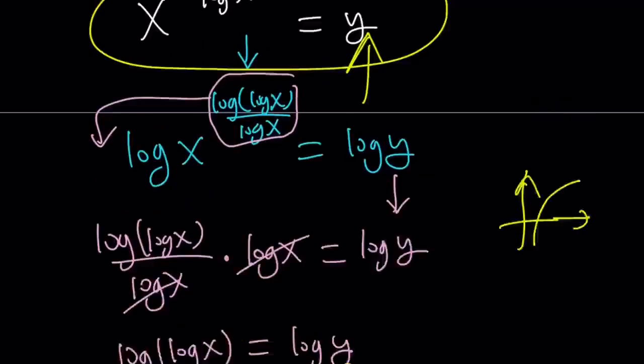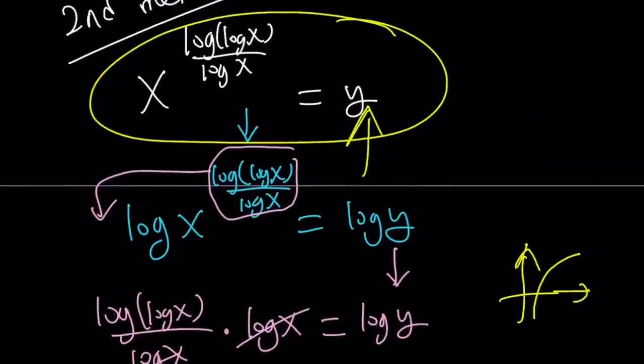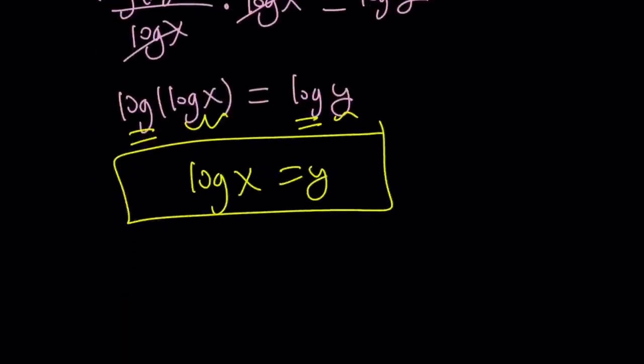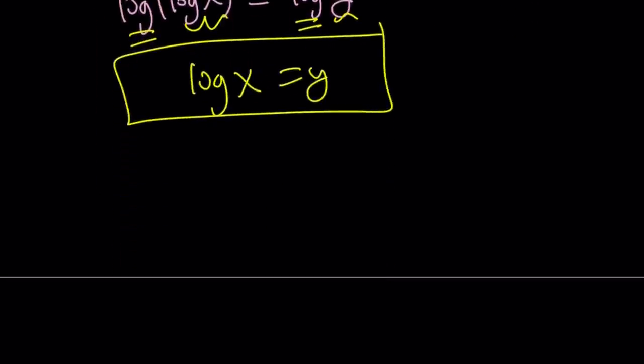And the second method basically focused on calling this y, logging both sides, and then simplifying. So this doesn't require a lot of properties. So I kind of like the second method better, especially if you're new to logs. If you're not new to logs, if you're really good at it, I'm pretty sure you did this mentally. Like you didn't even use a pen, pencil, paper, whatever. Some people are like, oh, I got this in 10 seconds, 5 seconds. You're amazing if you did that.